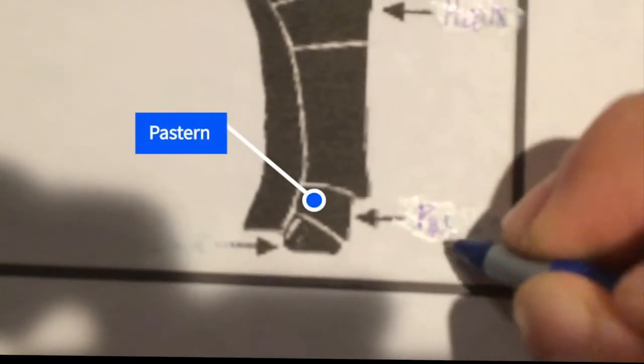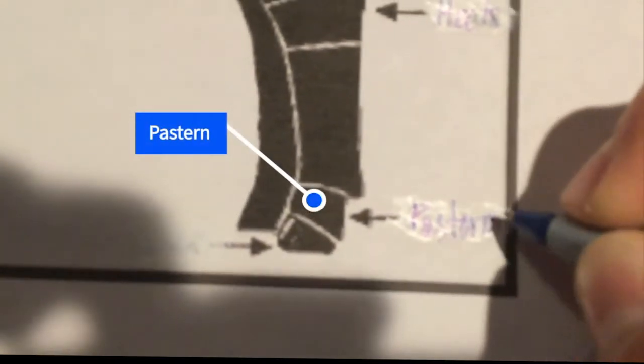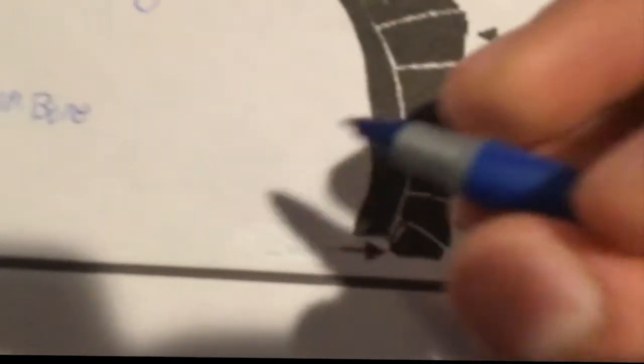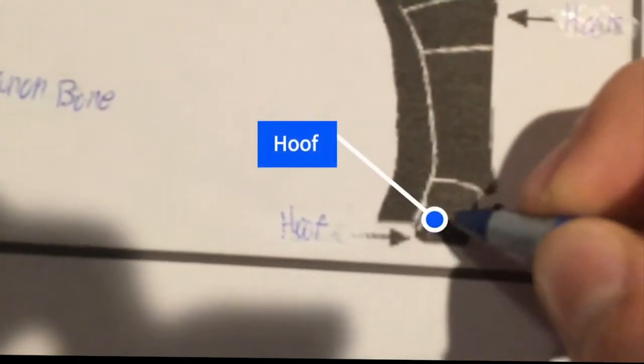The pastern, which is right here above the hoof. And the hoof is right there.